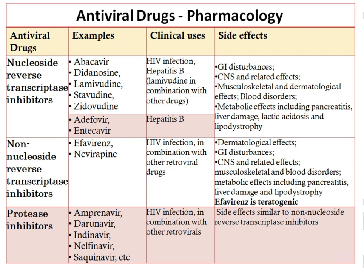Another drug, adefovir and entecavir, are mainly used in hepatitis B, with similar side effects. Then non-nucleoside reverse transcriptase inhibitors — efavirenz and nevirapine — are mainly used in HIV infection in combination with other antiretroviral drugs. Side effects include dermatological effects, GI disturbances, CNS related side effects, musculoskeletal, blood disorders, and metabolic effects including pancreatitis. Efavirenz is mainly teratogenic.